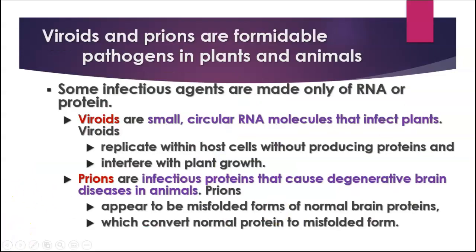There are other kinds of infectious particles similar to viruses in some ways but not the whole thing. Viroids are small circular RNA molecules that can infect plants — they don't produce proteins, but they do interfere with plant growth, and they only infect plants. Another type of infectious agent is a prion. Prions are infectious proteins that can cause degenerative brain diseases in animals — mad cow disease, which had an outbreak in the United Kingdom several years ago, is one example. Prions appear to be misfolded forms of normal proteins, and they convert normal proteins into misfolded forms. They can also infect humans, though they're not very common.